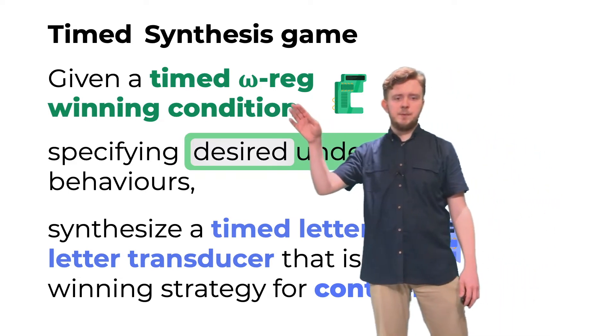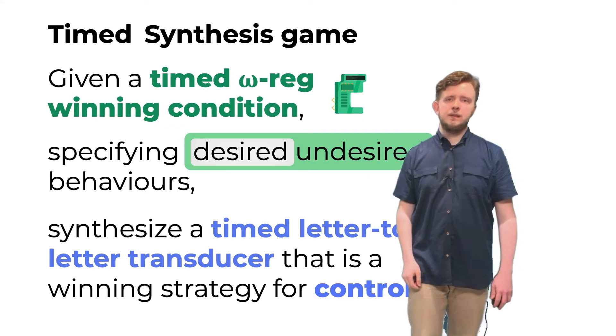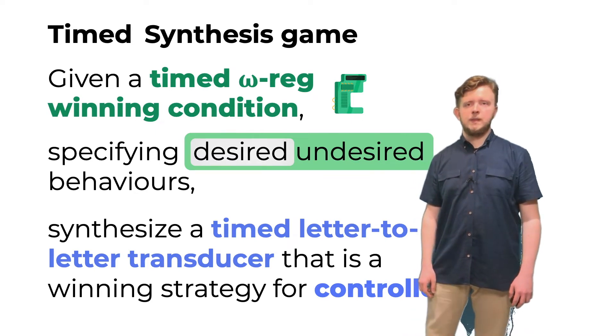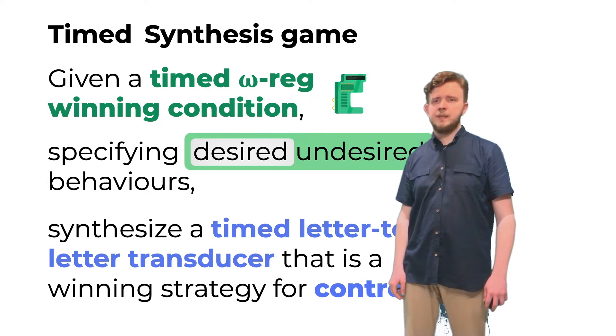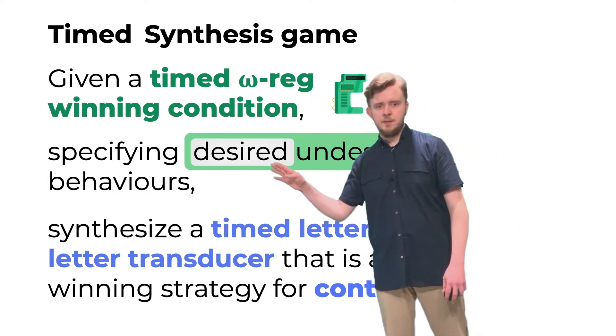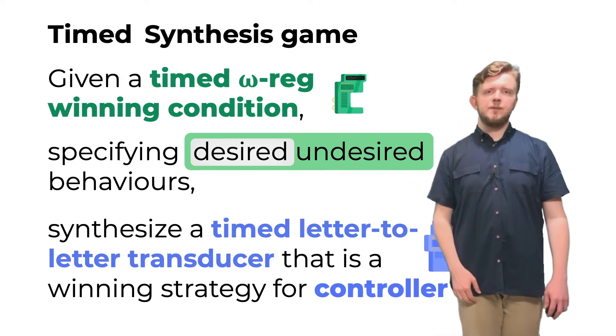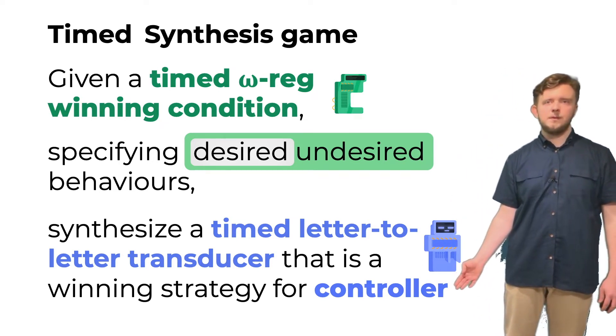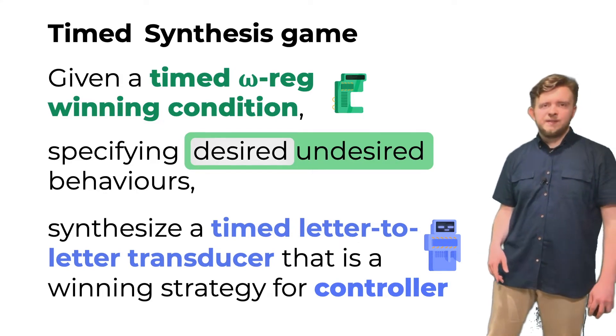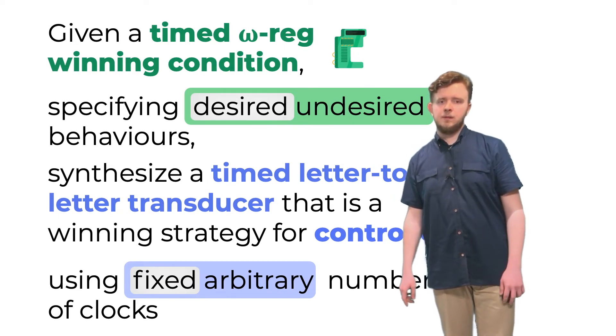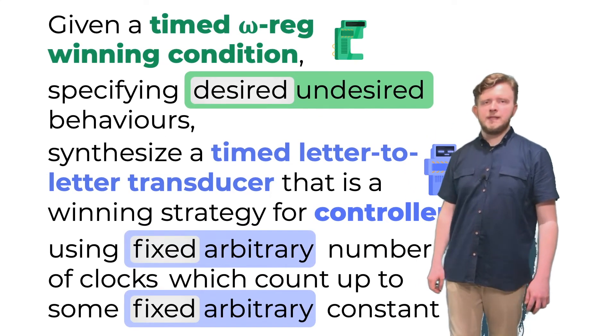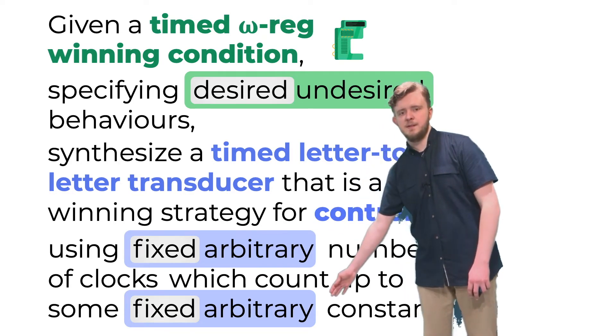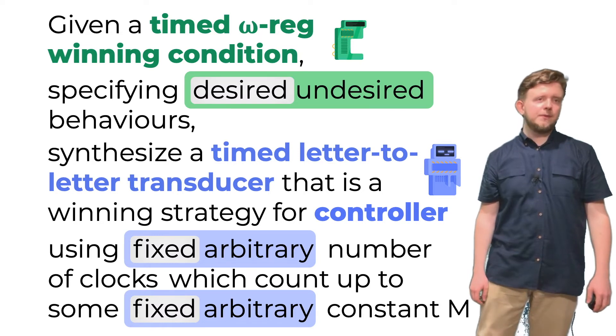In the original setting, we had the Omega regular language here, and those are closed under the complement, so this was not a problem earlier, but unfortunately, it is not the case for timed automata. We may therefore want to use a condition that tells us either when the controller wins or when the controller loses. The other choices are related to the clocks of the controller. We want to synthesize a timed transducer that uses those clocks. So, we may wish to fix the number of the clocks the transducer can use or leave that unspecified. Similarly, the clocks count up to some constant m, and we may want to specify that constant in advance or quantify it existentially.